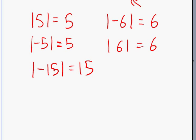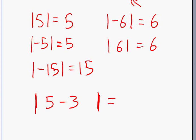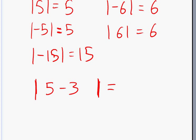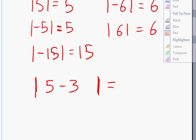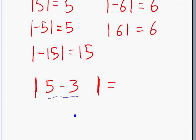You can use that rule for the most part, except when you have a mathematical operation inside the absolute value. For example, what is the absolute value of five minus three? First, you need to perform the operation inside first. Five minus three is two, and the absolute value of two is two.